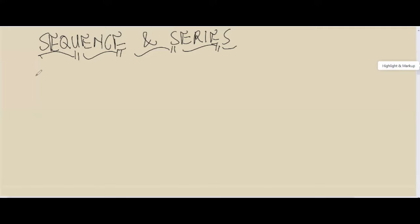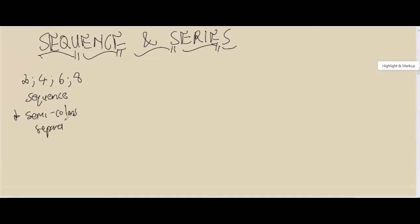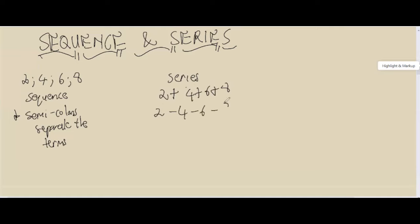Let's put an example. We have 2, 4, 6, 8 — by nature this is what we call an arithmetic sequence. A sequence is characterized by semicolons separating the terms. In a series it is the same thing, but the only difference is that we might have 2+4+6+8 or 2−4−6−8. With a series, the plus or minus sign separates the terms.